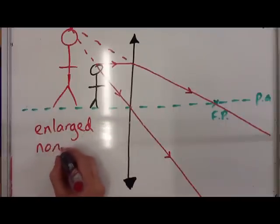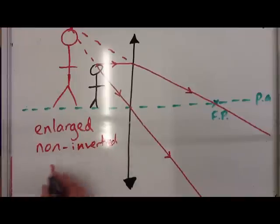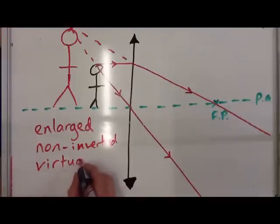This image is enlarged, it is non-inverted, and because it's made with virtual lines, it is virtual.